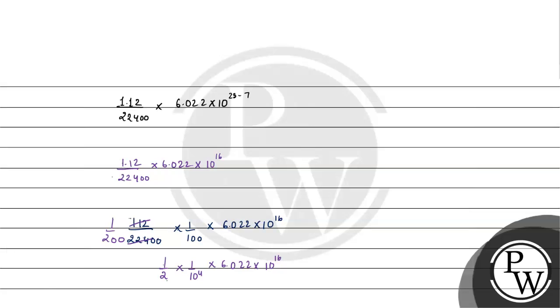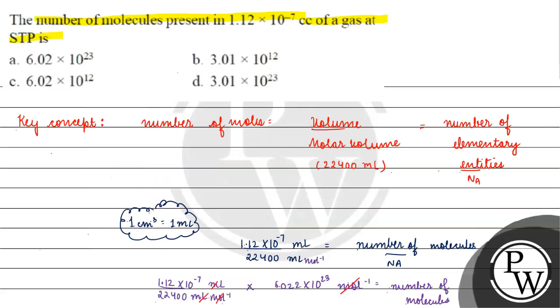It will cancel out to 3.011 and this will come to the answer 3.011 into 10 raised to the power of 12. Coming back to the question, correct answer for this question will be option B.